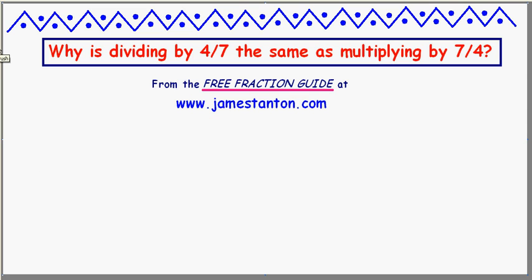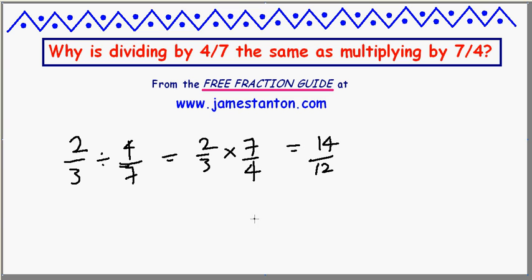We've all been told that to divide a fraction, we need to multiply by its reciprocal. For example, if we were asked to work out two-thirds divided by four-sevenths, the technique we're told as youngsters is to really make this two-thirds times seven-fourths, to get the answer 14-twelfths or seven-sixths.